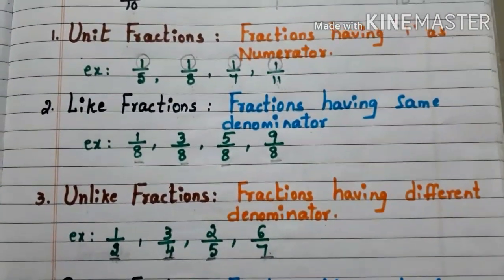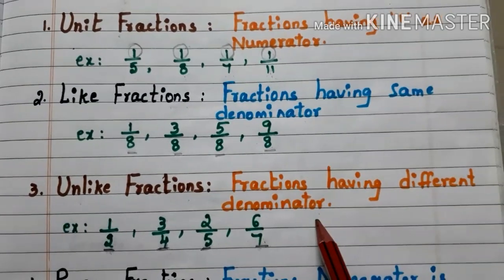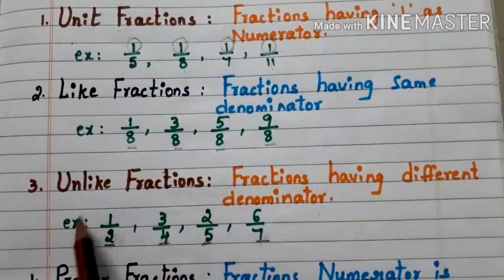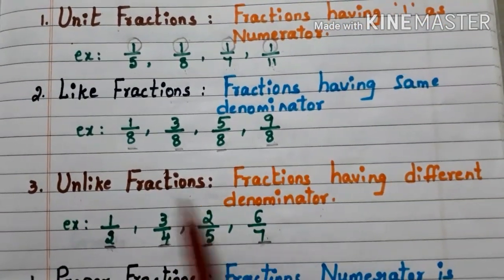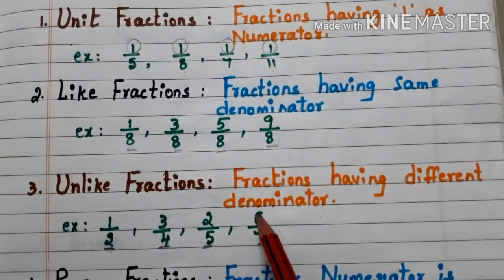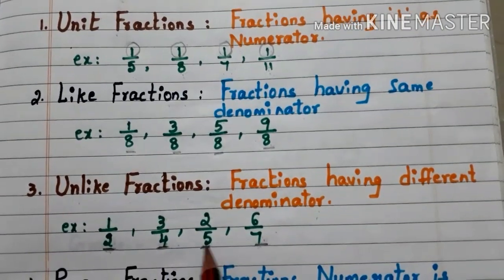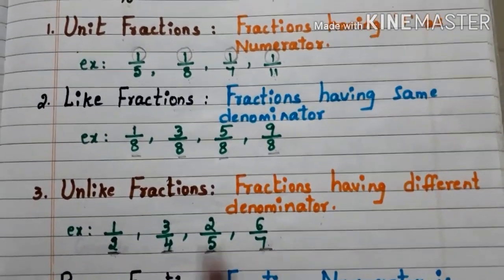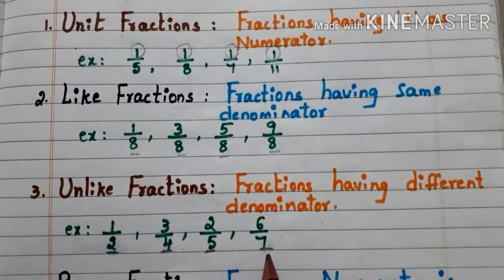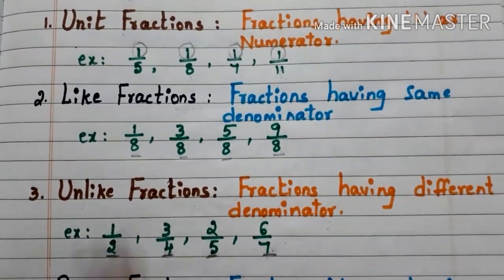Let us go to unlike fractions. Fractions having different denominators are called unlike fractions. Here we have some examples: 1 by 2, 3 by 4, 2 by 5, and 6 by 7. Observe the denominators — these fractions have different denominators. So these type of fractions are known as unlike fractions.